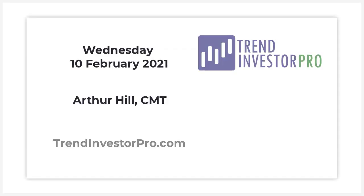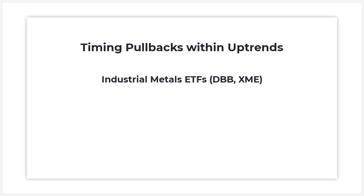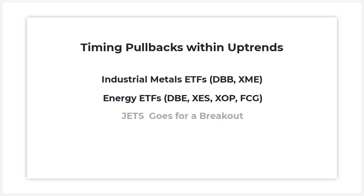Hey, this is Arthur Hill, chief technical strategist at trendinvestorpro.com. It is Wednesday, February 10th. Thank you for tuning in to our YouTube channel. Today I want to talk about trading in the direction of the bigger trend — looking for setups that are pullbacks within the bigger uptrend. We'll look at some industrial metals ETFs, energy ETFs, and the airline ETF. We'll use RSI, price patterns, and Stoke RSI to transition from setup to signal, and I'll show an example using the ATR trailing stop.